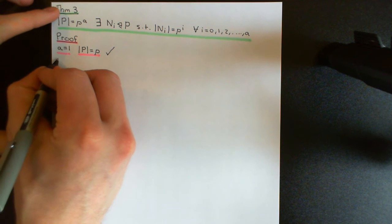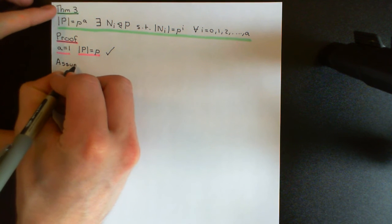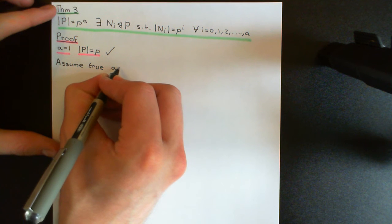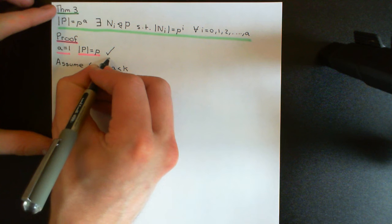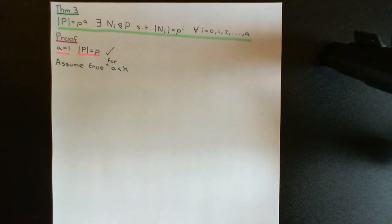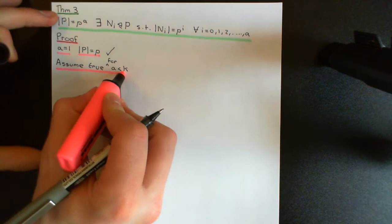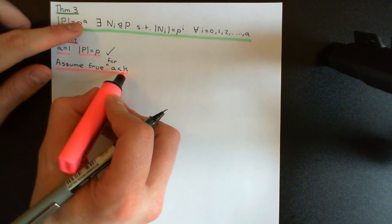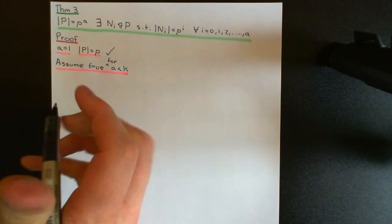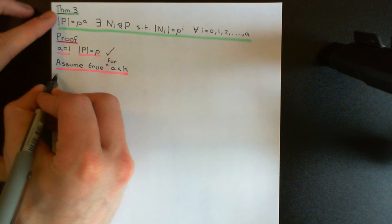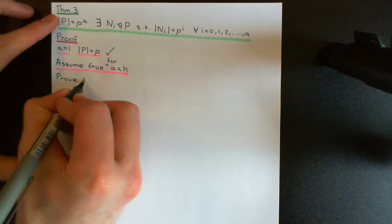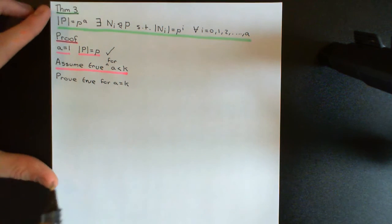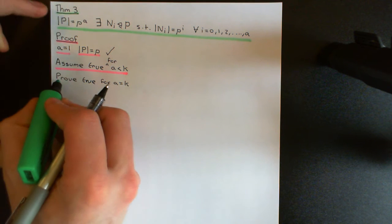Now we do the inductive assumption. We're going to assume that the theorem is true for a less than k. We assume it's true when the order of our p-group is p to the power of a, where a is strictly less than some value k. What we want to do is prove that this implies the theorem is also going to be true when a is actually equal to k — i.e., when we're dealing with a p-group of order p to the power of k.